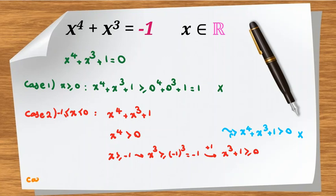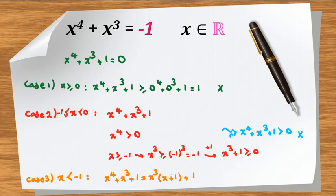Case 3: x is less than negative 1. We want to analyze x to the 4 plus x cubed plus 1 again. We rewrite it as x cubed times (x plus 1) plus 1. We know x is less than negative 1.